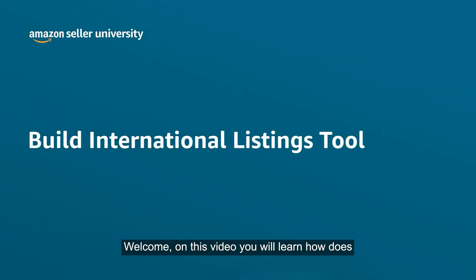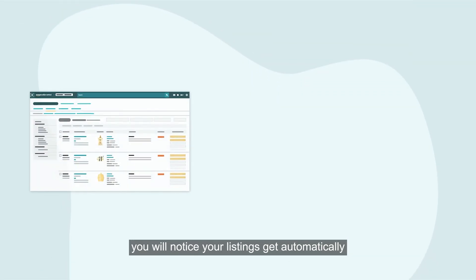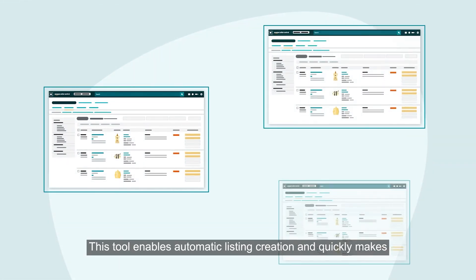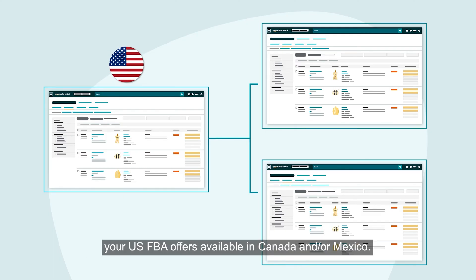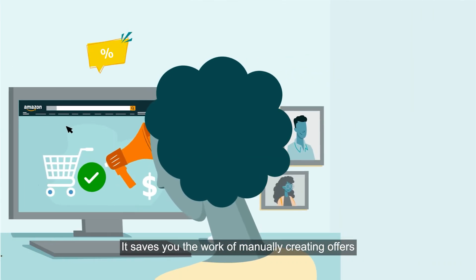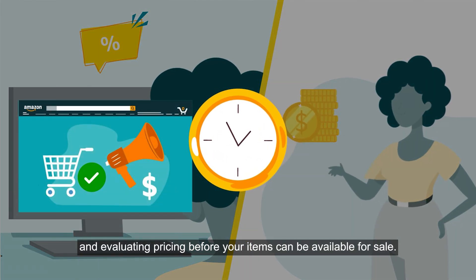Welcome. On this video, you will learn how the Build International Listings Tool works. When enrolling in remote fulfillment with FBA, you will notice your listings get automatically connected to the Build International Listings Tool. This tool enables automatic listing creation and quickly makes your U.S. FBA offers available in Canada and/or Mexico. It saves you the work of manually creating offers and evaluating pricing before your items can be available for sale.